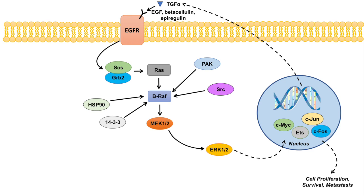And because it is important in regulating cell proliferation, survival, and metastasis, this pathway is very, very important in cancer pathogenesis. So now that we know the overview of the pathway, in the next lesson I'm going to talk to you guys about how this pathway is involved in various types of cancer pathogenesis.